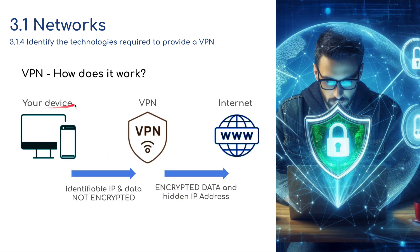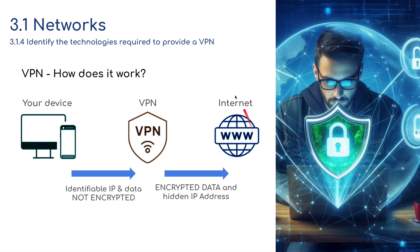For example, your device — it could be a mobile phone or a computer — has an identifiable IP address and identifiable, unencrypted data. We pass that through a VPN: the data becomes encrypted, the IP address is hidden, and that's what the internet sees. It might see you in a different location, and any data passing through is encrypted. Anything received back from the internet is also encrypted, and the IP address is hidden as it comes back to your device.